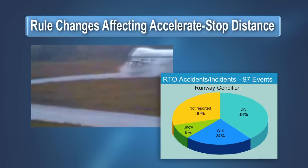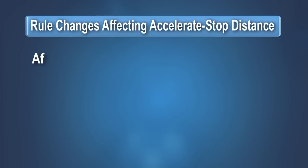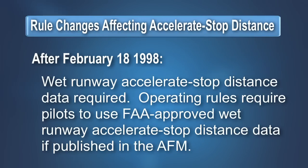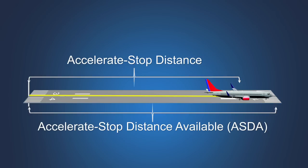In response to the disproportionate number of rejected takeoff accidents on wet runways, the certification rules were again amended in 1998. Manufacturers are now required to provide wet runway accelerate stop distance and wet runway takeoff distance data in the airplane flight manual for all newly type-certificated transport airplanes, and the operating limitations for these airplanes require the use of this data when the runway is wet. The accelerate stop distance required for takeoff will be the longer of the dry runway accelerate stop distance or the wet runway accelerate stop distance. The calculated accelerate stop distance cannot be longer than the accelerate stop distance available.